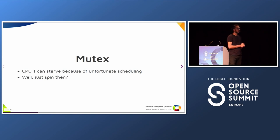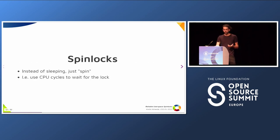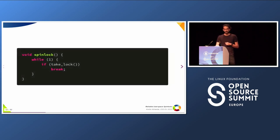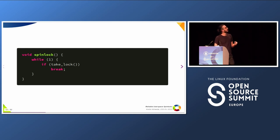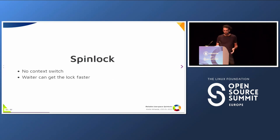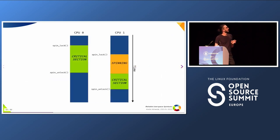So why do a context switch? Maybe we can just spin instead of sleeping. Spin locks basically use CPU cycles to check for the lock and try to take it. This is probably the most basic spin lock ever: you loop forever, try to take the lock — if you take it, you break. If not, you just loop again and try again. Keep spinning. This should be very fast — you can get the lock faster without a context switch, without the need to go to the kernel. The ideal image would be that as soon as the lock is unlocked, CPU 1 will get the lock and that's it.